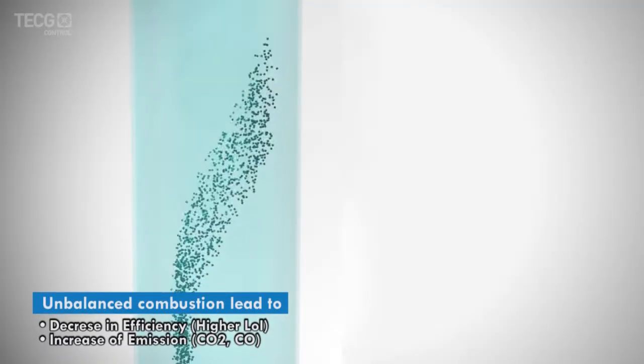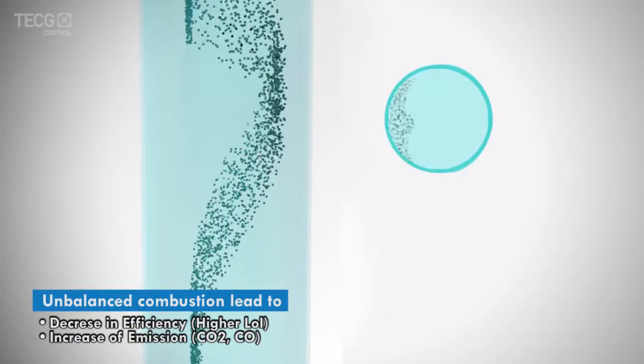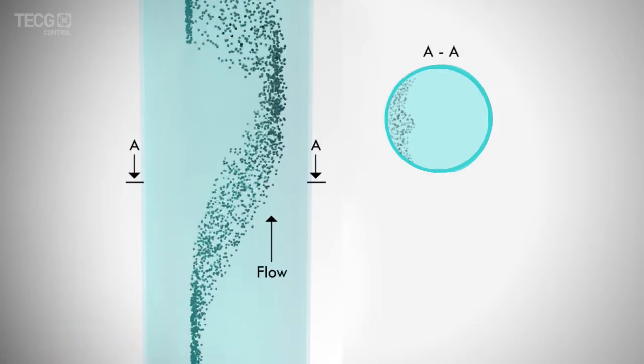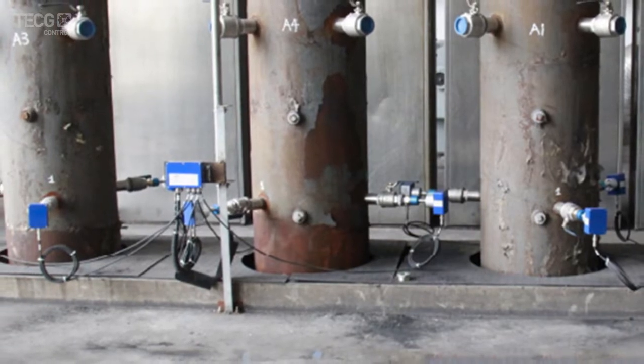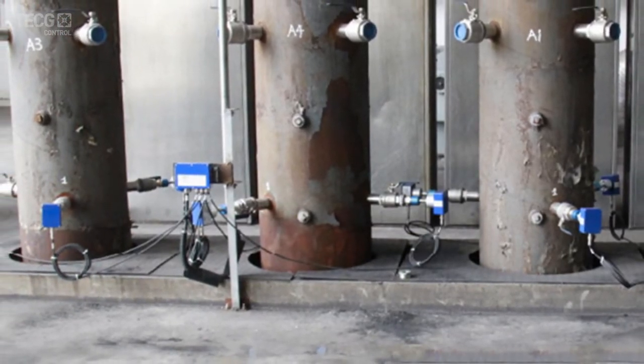The imbalance of coal flow to burners will lead to non-uniform combustion and lower the efficiency of the boiler. However, most users are still using a manual sampling method and only a few times each year.